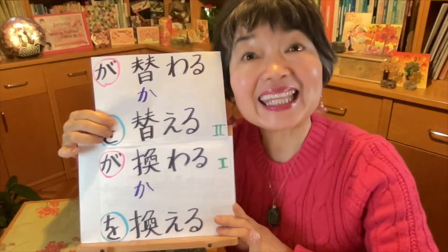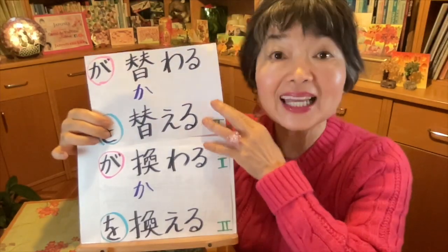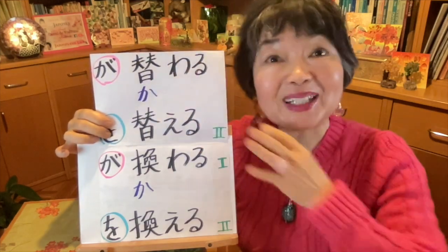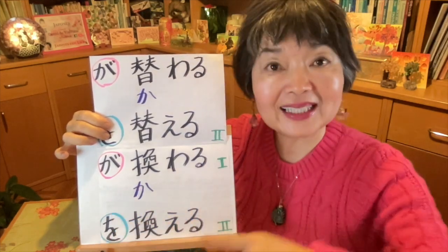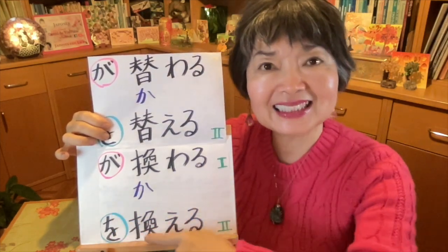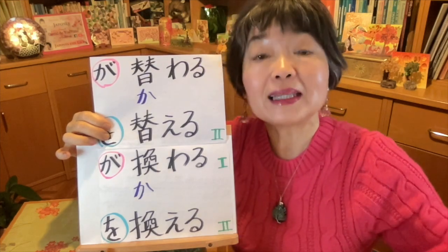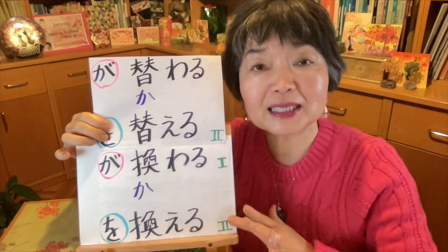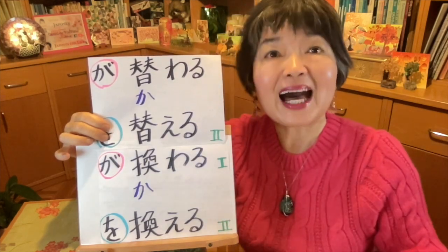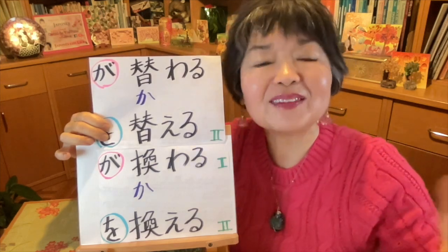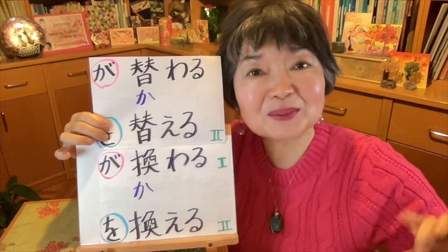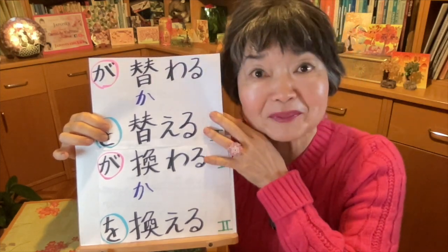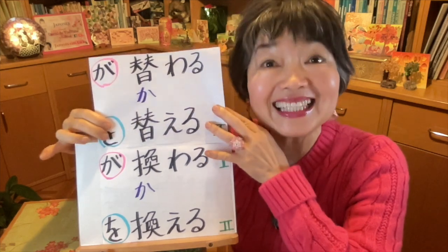So this kanji 換わる means you change to something new. And the last kanji 替わる means to change something but with the same value — the value must be the same. For example, I have a very old mobile phone and I want to change to a new one, but the new one is more expensive, so the value is not the same — in that case we don't use this kanji.